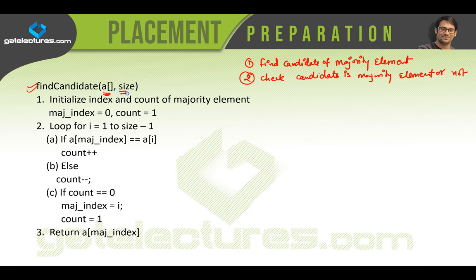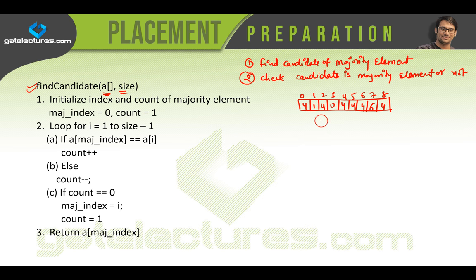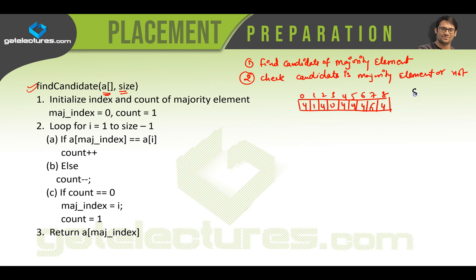We have two inputs: array A and the size of the array. For demo purposes, let's take an example array with values 4, 1, 4, 0, 4, 4, 4, 6, 4 at index locations 0 through 8. The element 4 is repeating a total of 6 times. The total size of this array is 9, and we pass this array A and size 9 into the algorithm.